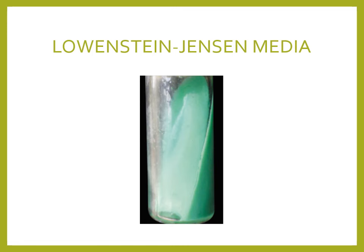The constituents of LJ media include malachite green and egg, and glycerol. Malachite green acts as an antiseptic and gives the media its green color. TB colonies on this media are buff-colored (cream color). Since both the media and the colony are buff-colored, the green background helps distinguish them. The colonies are described as rough, buff, and tough. Many questions can come from tuberculosis topics.